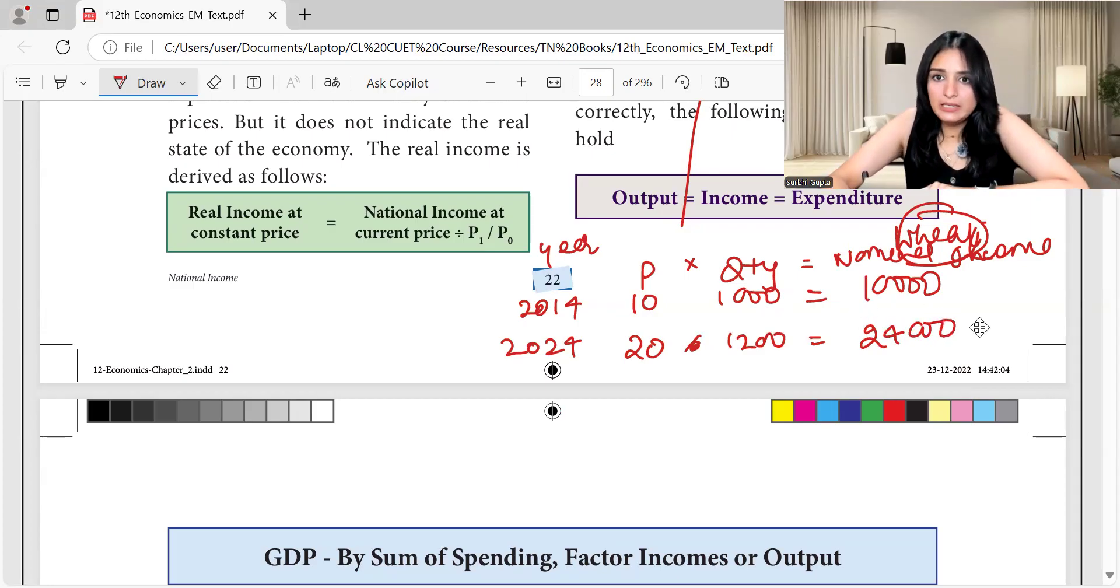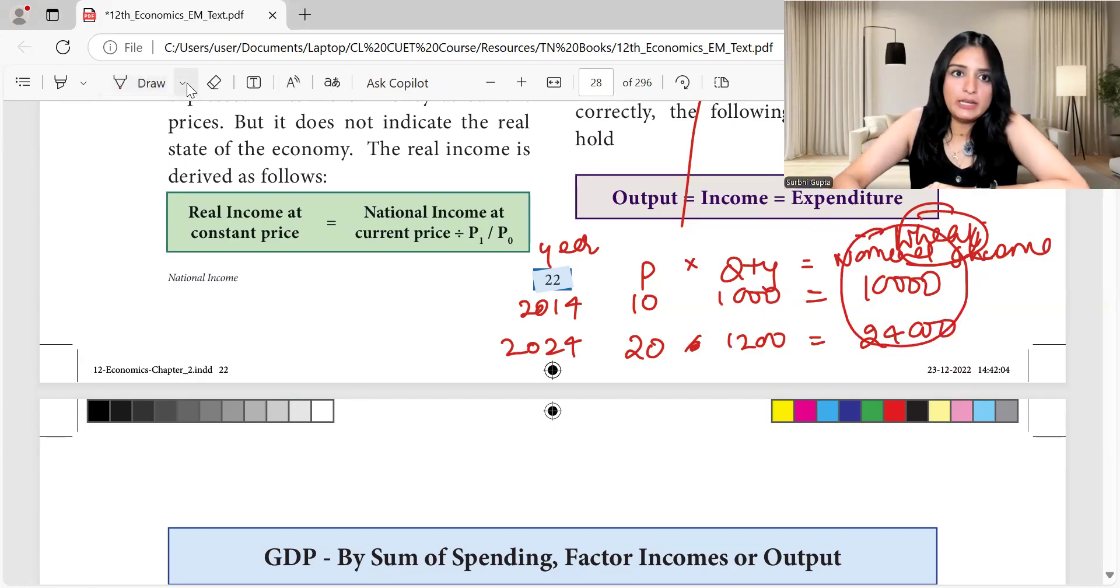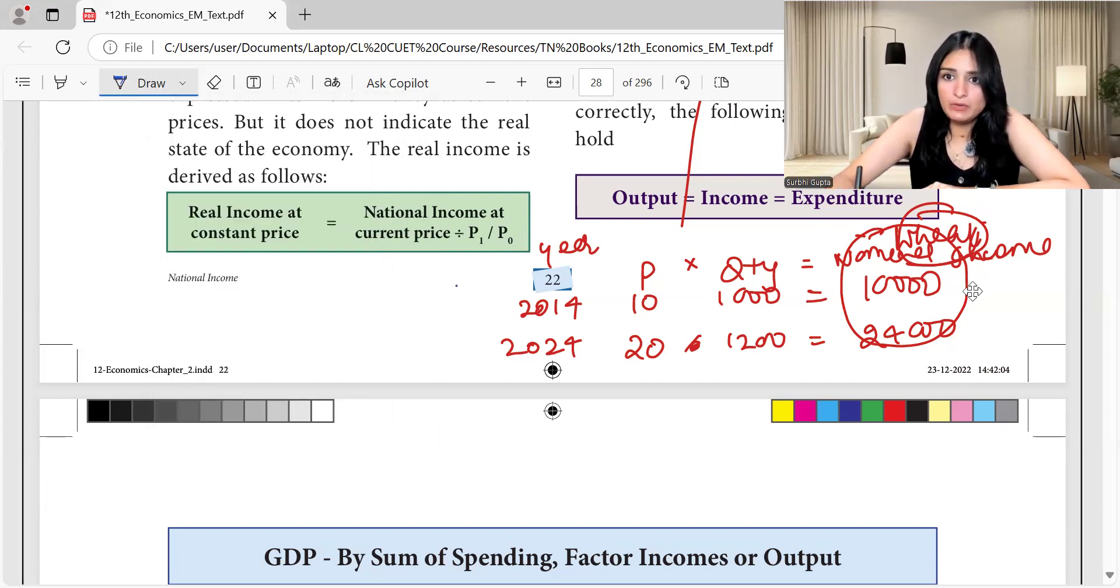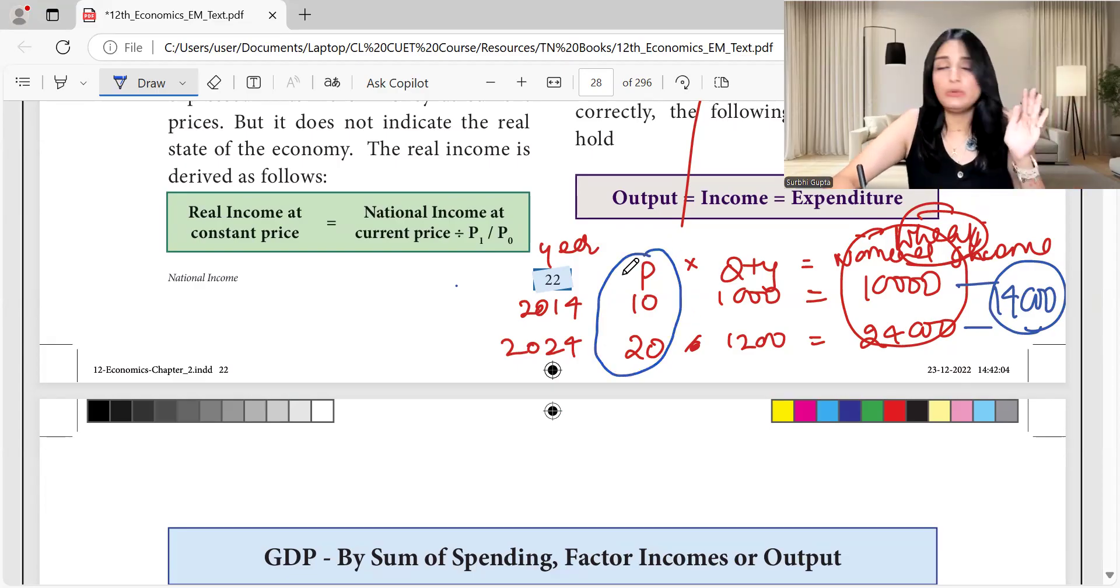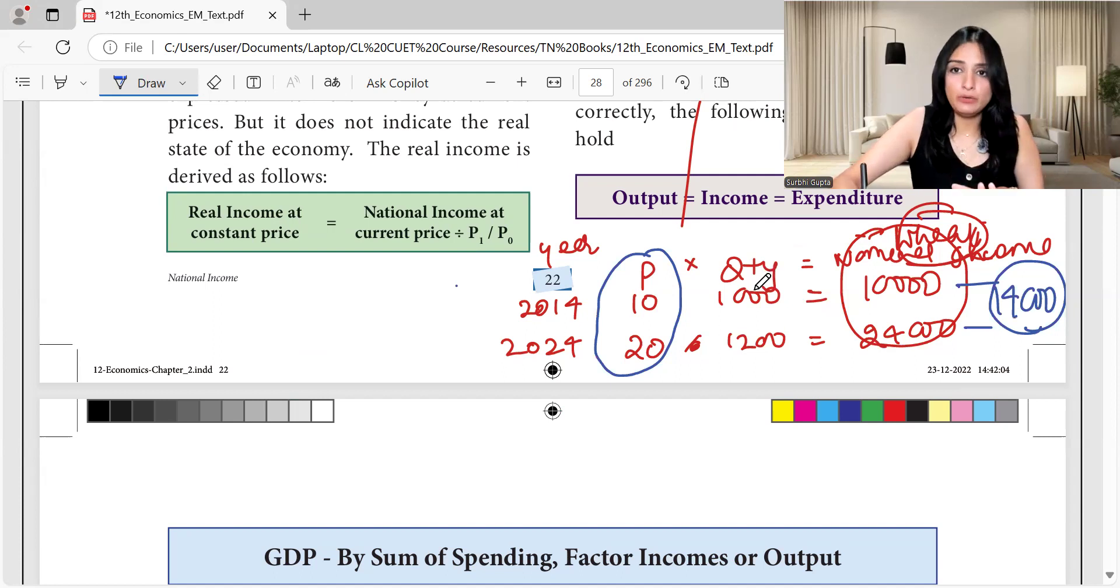So if we only see this number we will tend to say that nominal income has increased in 10 years, right from 10,000 to 24,000. But nominal income has increased, how much real income has increased? Nominal income has increased by 14,000. But that is also part of price increase. If we keep aside the increase in price, if we only want to see in real terms. Real terms means actual quantity and actual production, by how much the production has increased other than the price.